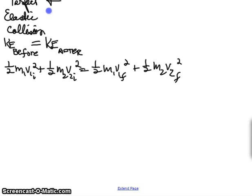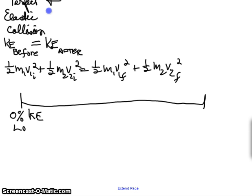On the other end of the extreme, on one end, we have a perfect elastic collision. This would be 0% kinetic energy loss. And this would be the so-called perfect elastic collision.